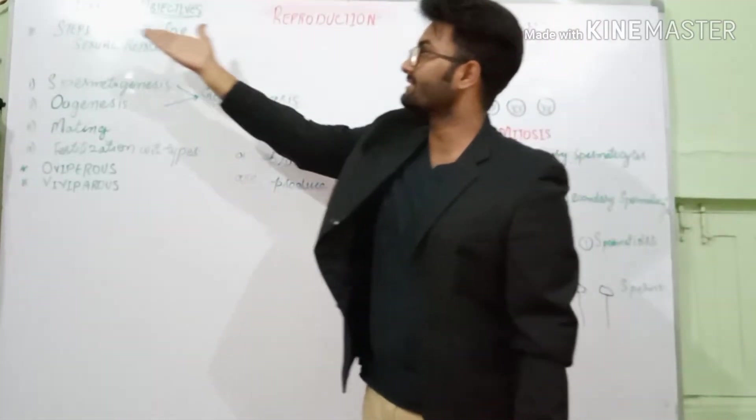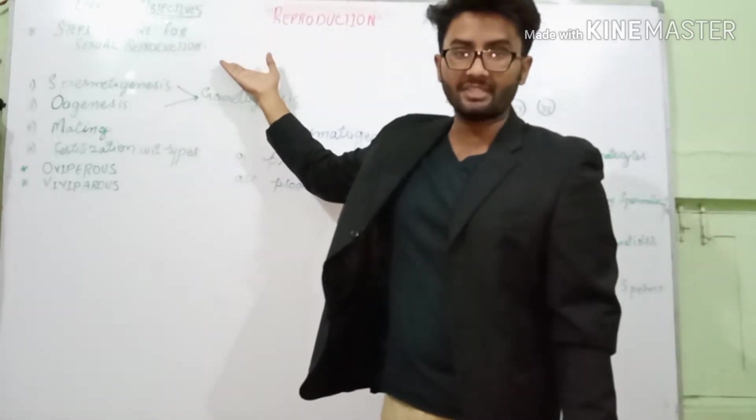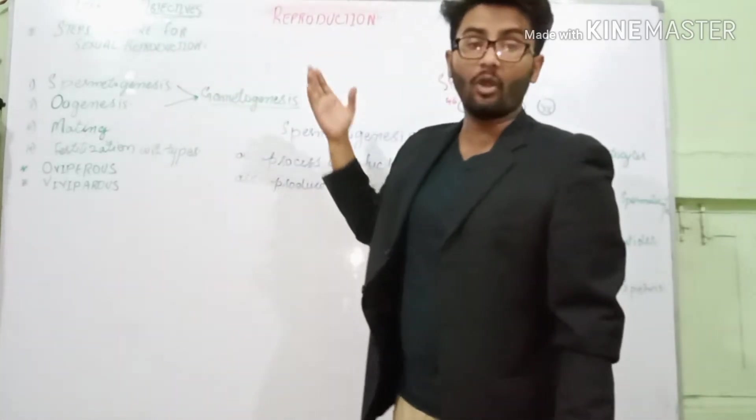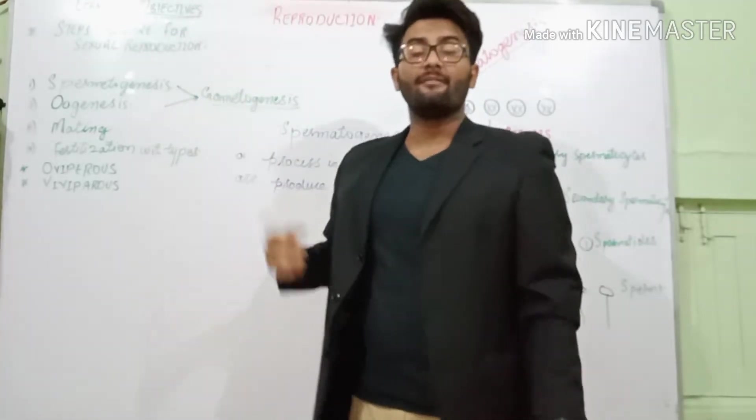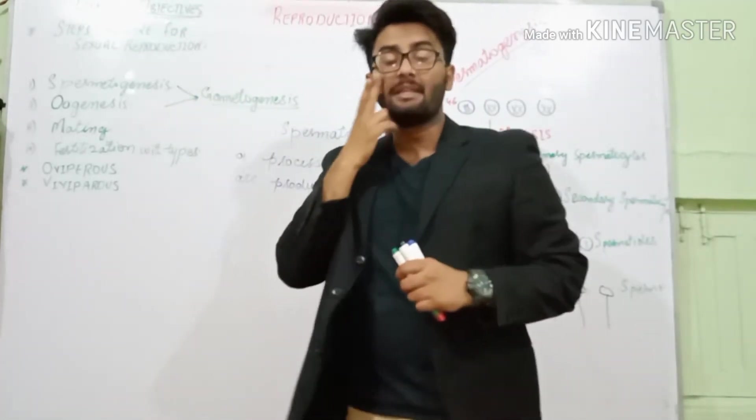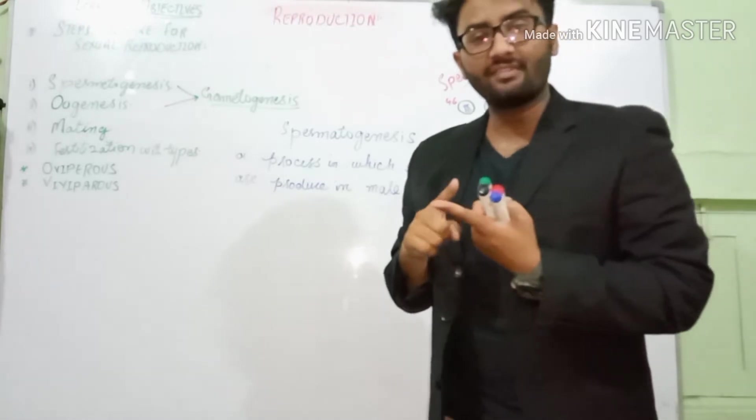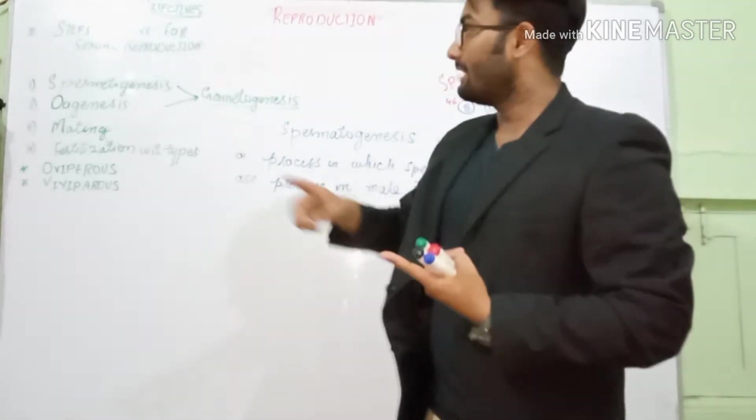Here are some learning objectives. Steps required for sexual reproduction. So what are they? First one is gametogenesis. Gametes - we have two different types of gametes. First is male gametes, second is female gametes, which is sperm and egg cell.